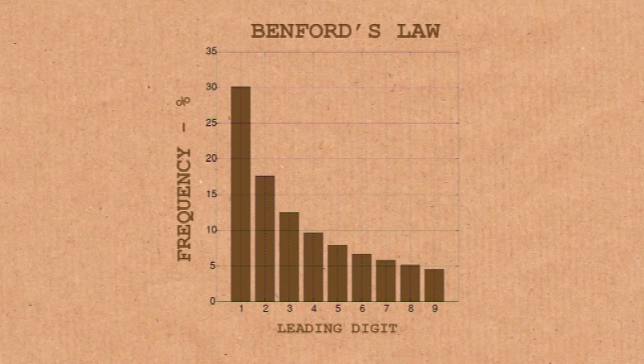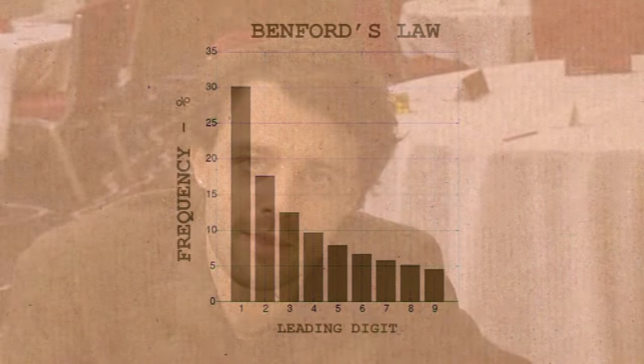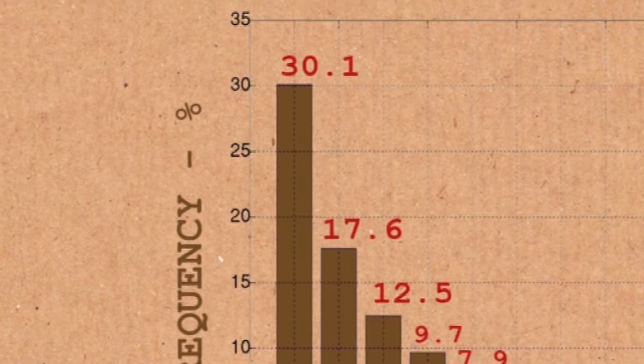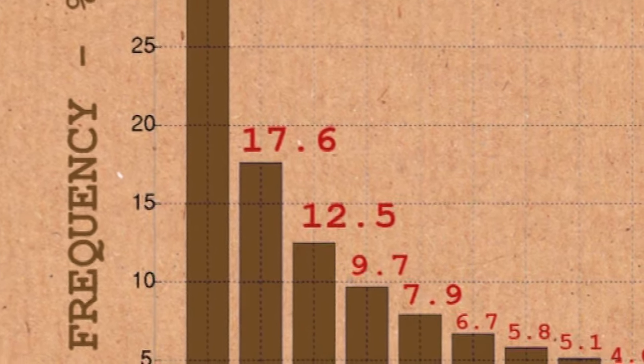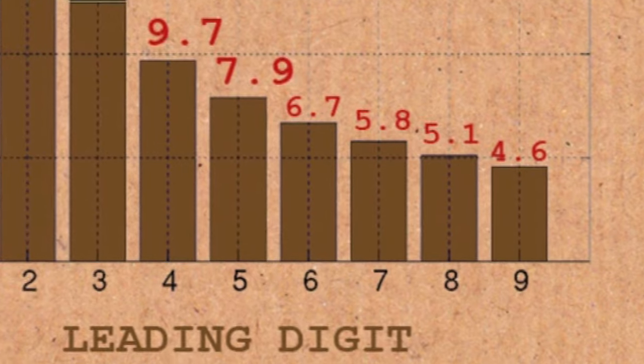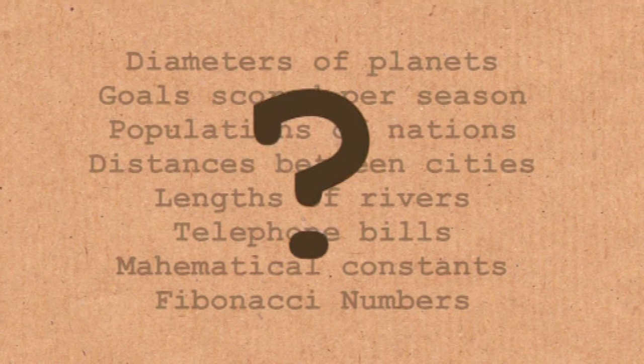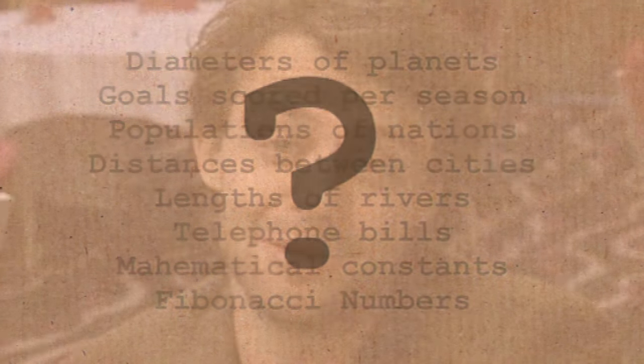When you tell people this, the reaction is disbelief. In the show, we get people to tweet numbers — like the distance from the venue to where they live converted into strange units. The interesting thing is it works so long as the distribution spans loads of orders of magnitude. But if you're picking numbers from lots of different distributions, the individual distributions don't have to span lots of orders of magnitude — the meta distribution of things picked from different distributions follows Benford's Law anyway.